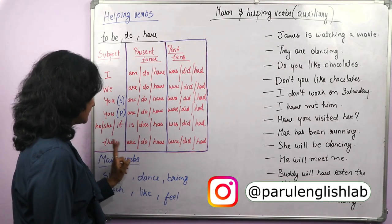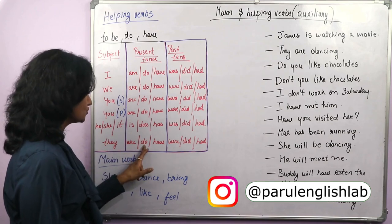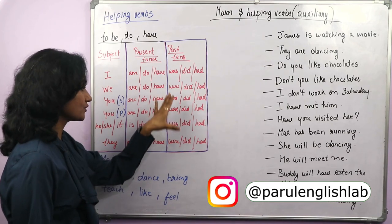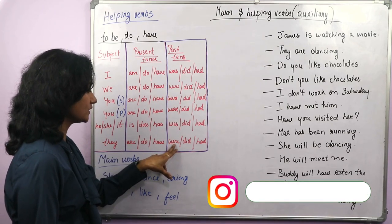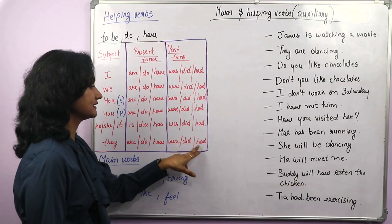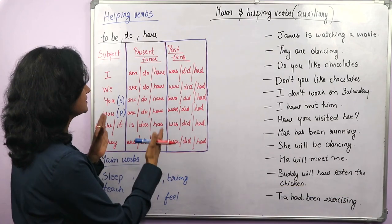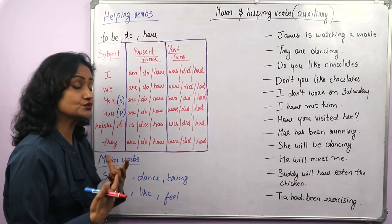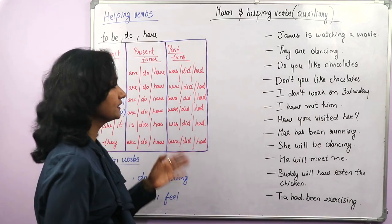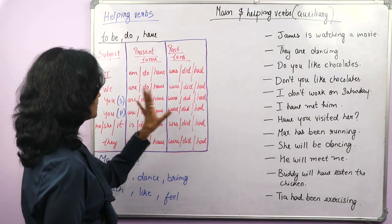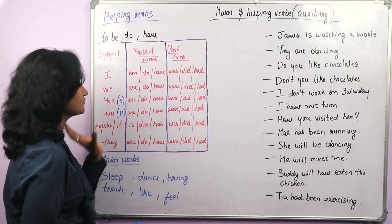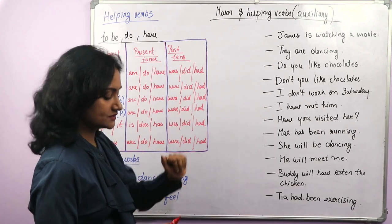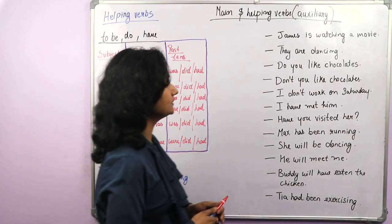They are, they do, they have. In past: they were, they did, they had. Basically, this is a table which shows the correct usage of these verbs with different subjects. Now let's look at some sentences here.